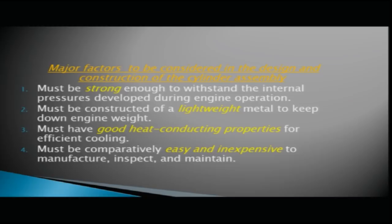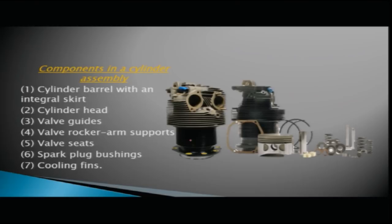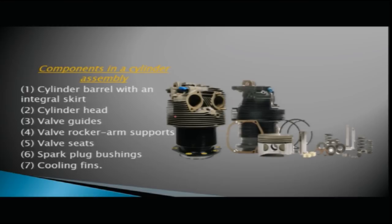The main components in a cylinder assembly are: the cylinder barrel with an integral skirt, the cylinder head, valve guides, valve rocker arm supports, valve seats, spark plug bushings, and cooling fins. You can see in the diagram the intake and exhaust valve area, spark plug area, valve support area, and the cooling fins on the cylinder.